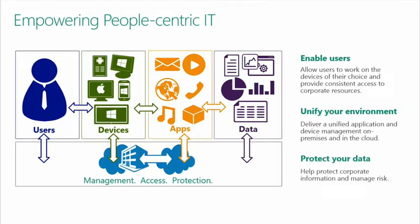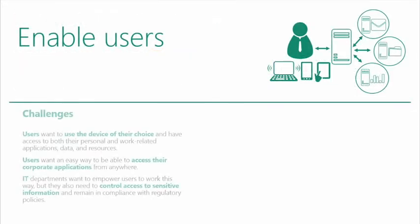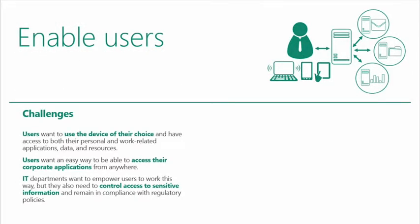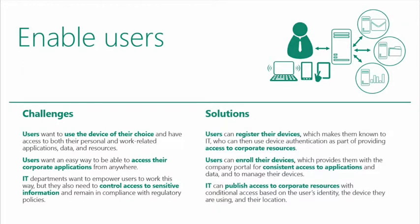Making sure this corporate information is not put at risk. In terms of the first pillar - enabling the users - I mentioned this choice of devices and the access to corporate applications and the control of information that IT needs to provide around that. So the answer for that is really enabling people to take their devices, register them with the corporate network so they become a known, trusted device for the enterprise. Enrolling the devices for management so we can ensure the devices have a consistent set of policy and the right controls on them. And also IT having the ability to publish applications and access to information in the most appropriate way for the user of that device.